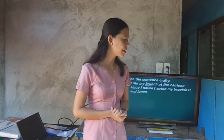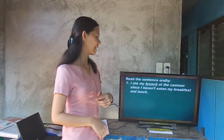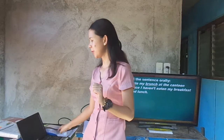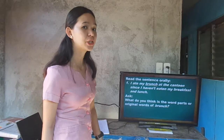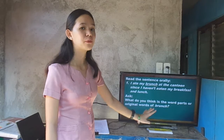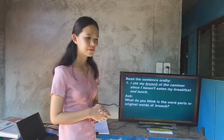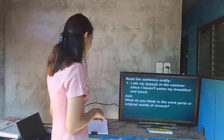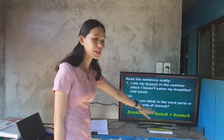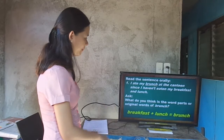I have here a sentence. Everybody, read: 'I ate my brunch at the canteen since I haven't eaten my breakfast and lunch.' Now look at the underlined word — 'brunch.' What do you think are the word parts or original words of brunch? Very good. The word parts of 'brunch' are 'breakfast' and 'lunch.' So when we combine breakfast and lunch, we can form the word brunch.